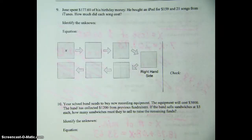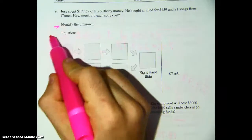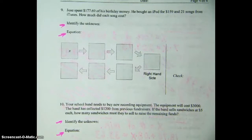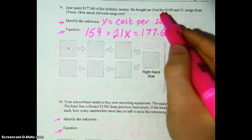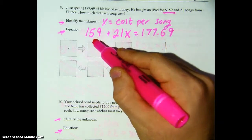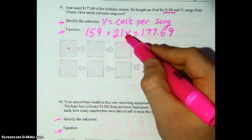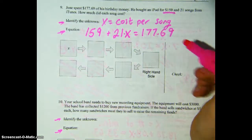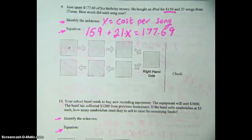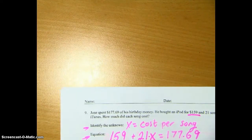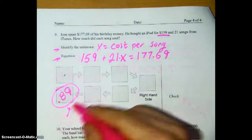The last thing we're going to do is take a look at the two problems on the back. Try and write out the unknown and an equation for each one and then solve it yourself. Pause now and try problems 9 and 10 completely by yourself. Here's your equation: you bought an iPad for $159 — that's your starting amount. Then for each of the 21 songs you increase by the cost of each song — so that's why it's 21 times x. Hopefully you got $0.89 per song. Please make sure you fill in all of this yourself.